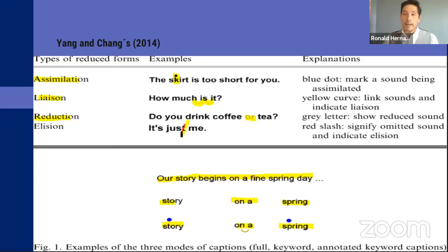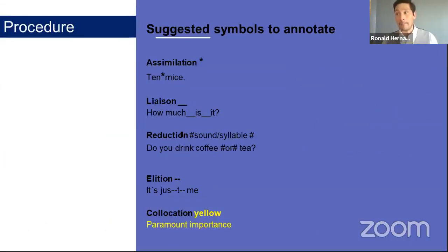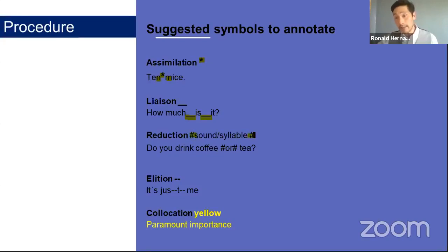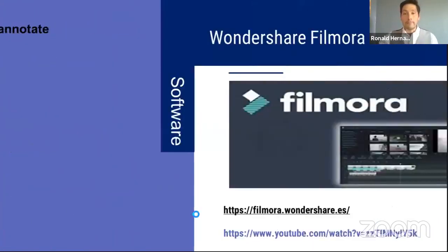Knowing teachers don't have much time, we propose the following simpler symbols you can use when producing captions. For assimilation we suggest a symbol between the two assimilated sounds. For liaison we propose a double underscore between connected sounds. For reduction we propose hashtags setting off the reduced sound or syllable. For elision we propose two hyphens or a dash. For collocations we propose simply using the color yellow. These symbols are designed to be practical and easy to implement.